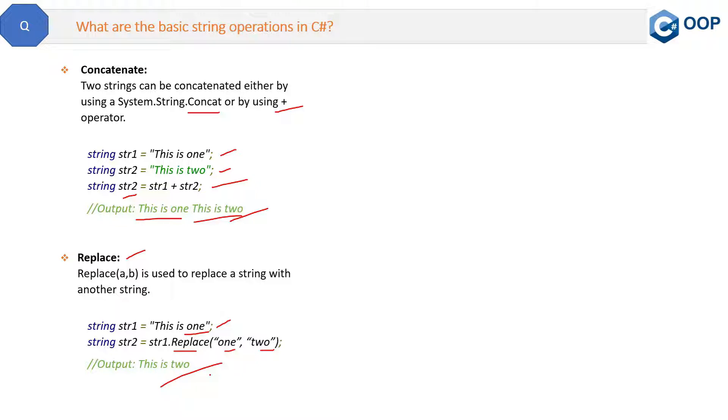Another important function of string is Trim. Trim is used to trim the white spaces in a string at the end. If you see the example here, suppose we have string str1 'This is one' and there is some white space at the end. If you apply the Trim method, it will remove the white space from the end. This is the purpose of the Trim method.